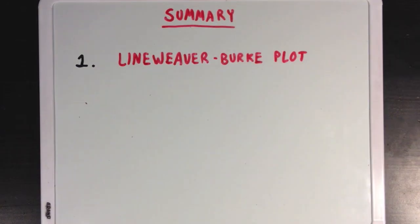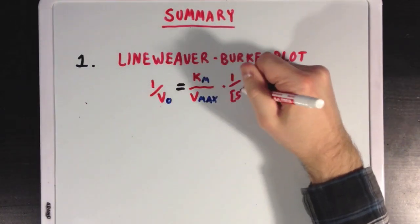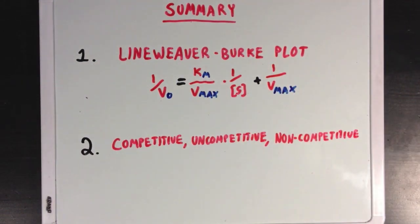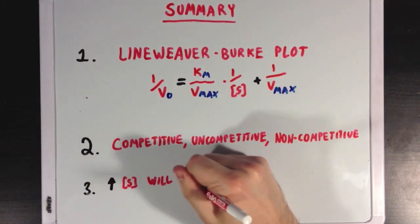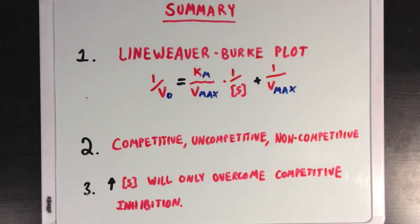So, what did we learn? Well, first we learned that we can rearrange the Michaelis-Menten equation to come up with a function for the Lineweaver-Burk plots. Second, we learned about competitive, uncompetitive, and non-competitive inhibition. And third, we learned that increasing the substrate concentration will only be able to overcome the inhibitory effects of competitive inhibitors.